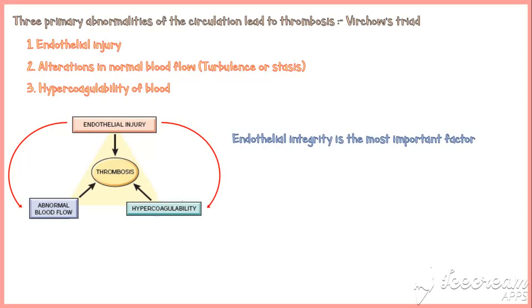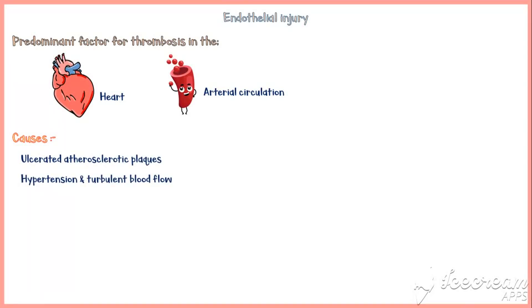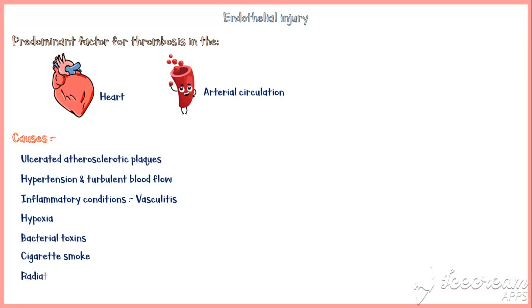Endothelial injury is the predominant factor for thrombosis in the heart and the arterial circulation. Major causes for endothelial injury include ulcerated atherosclerotic plaques, hypertension and turbulent blood flow, inflammatory conditions involving blood vessels such as vasculitis, hypoxia, bacterial toxins, cigarette smoke, radiation, intravenous injections, and homocystinemia.